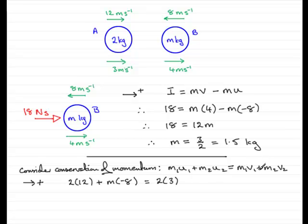Then we have this plus here. Then we have the mass of B, which is going to be m, multiplied by its final velocity. And we've got 4 here, acting in the positive sense. So I just put that as 4.